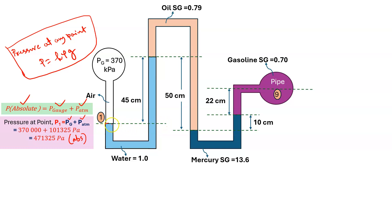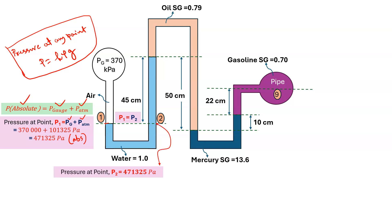From the two-fluid interface, I'm drawing a horizontal line. Pressure at the two-fluid interface — P1 equals P2 — because pressure at the same reference line in the same fluid will be the same. We already got P1, so P2 will be the same: 471,325 Pascal.